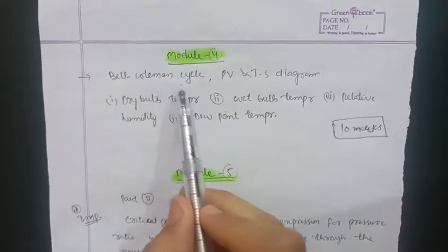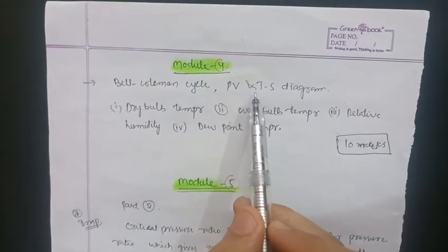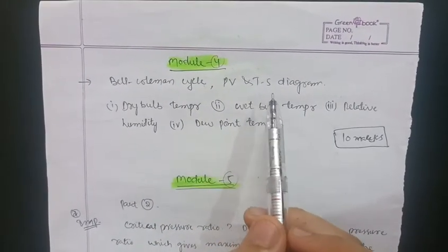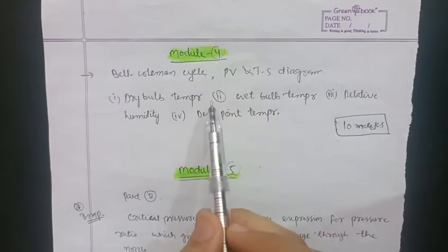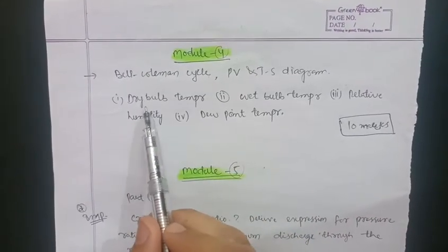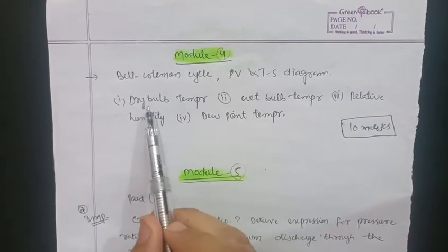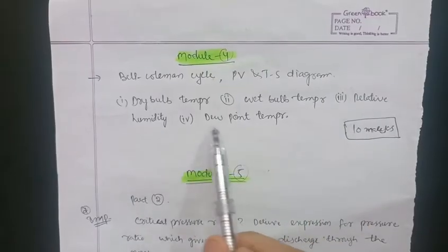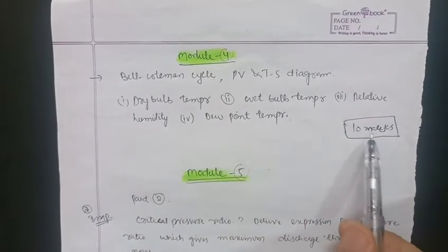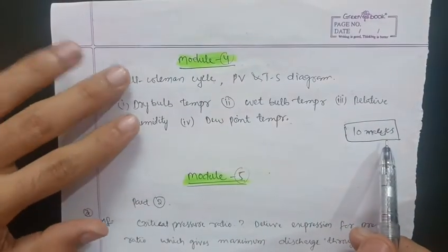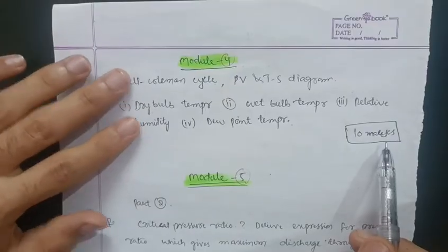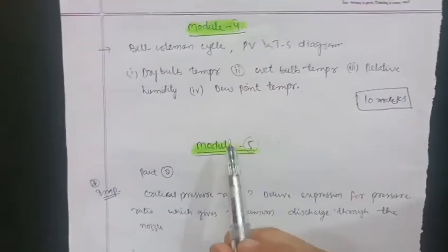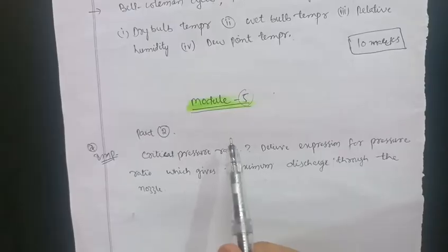In Module 4, go through the Bell Coleman cycle with the PV and TS diagram. Also, they may ask definitions of dry bulb temperature, wet bulb temperature, relative humidity, and dew point temperature. It carries 10 marks — out of these two topics, one will definitely appear.